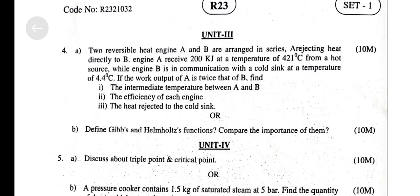Two reversible heat engines A and B are arranged in series, with A rejecting heat directly to B. Engine A receives 200 kJ at a temperature of 421°C from a hot source. Engine B communicates with a cold sink at a temperature of 4.4°C. If the work output of A is twice that of B, find: the intermediate temperature between A and B, the efficiency of each engine, and the heat rejected to the cold sink.